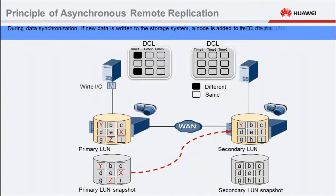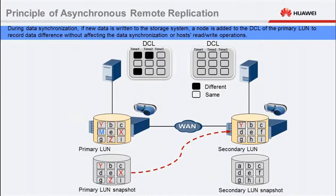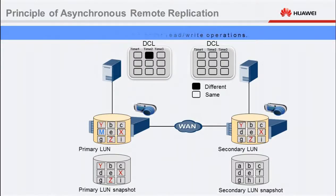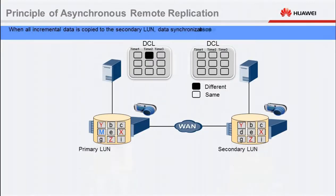During data synchronization, if new data is written to the storage system, a node is added to the DCL of the primary LUN to record the data difference without affecting the data synchronization of hosts' read-write operations. When all incremental data is copied to the secondary LUN, data synchronization is complete and the snapshots are stopped. The storage system then waits for the next synchronization.